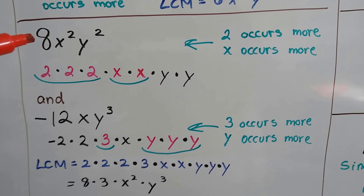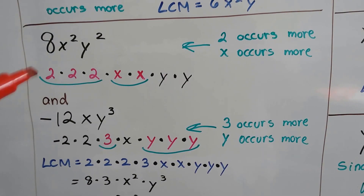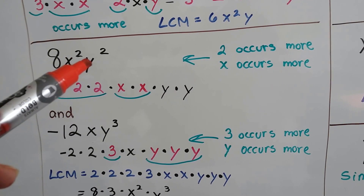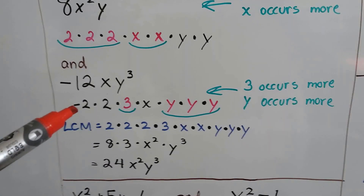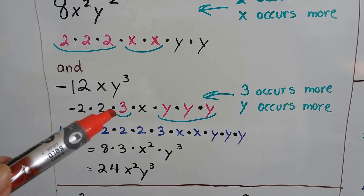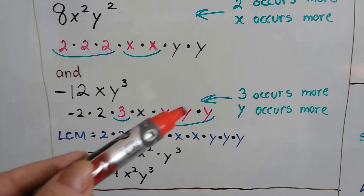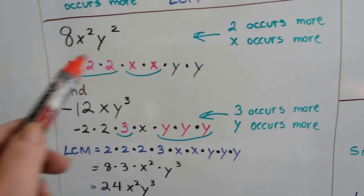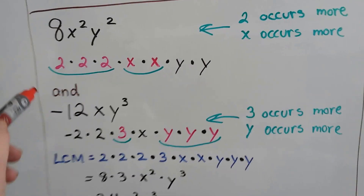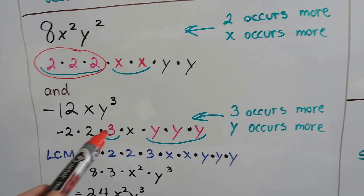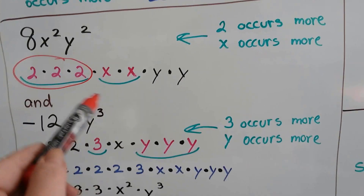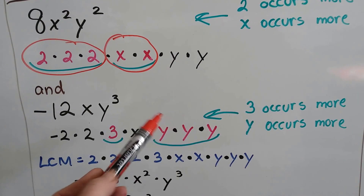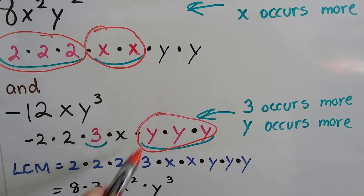Let's try another example. We have 8x²y² and negative 12xy³. Factoring: 8x²y² is 2 times 2 times 2 times x times x times y times y. And negative 12xy³ is negative 2 times 2 times 3 times x times y times y times y. The 2 occurs more in the first expression — three 2's versus two. The x occurs more in the first expression — two x's versus one. The y occurs more in the second — three y's versus two.